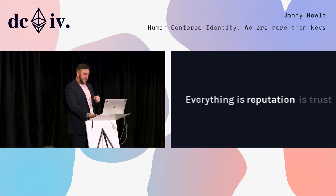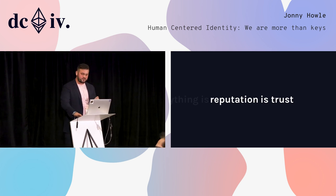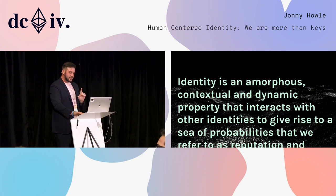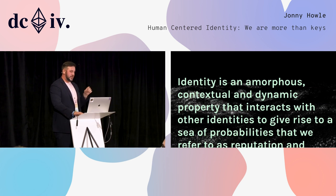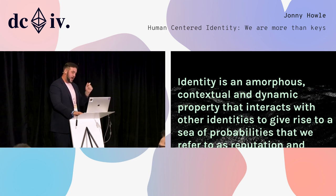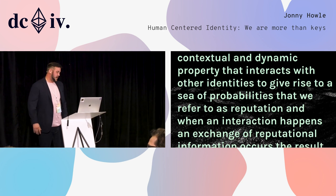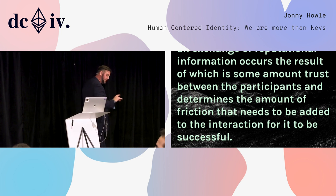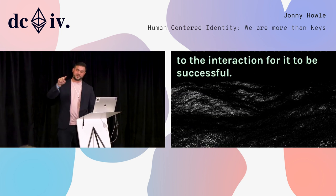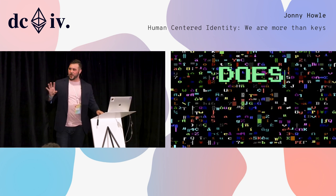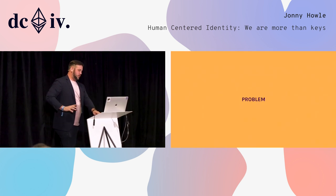Everything is reputation, and reputation is what gives rise to trust. Identity is this amorphous, contextual, dynamic property that interacts with other identities to give rise to a sea of probabilities that we refer to as reputation. When an interaction happens, an exchange of reputational information occurs — the result of which is some amount of trust between participants that determines the amount of friction needed to be added to the interaction for it to be successful. That's really hard to put into computers, and that's the problem.